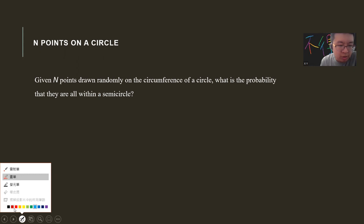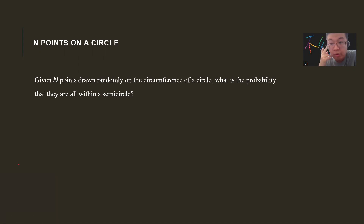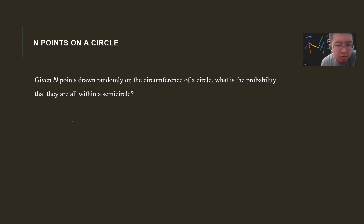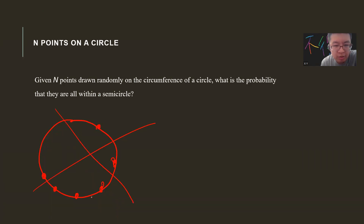This problem is a common interview question. If you want to see more interview questions, you can click my video list below. The problem is basically: you have a circle, you draw some points, and you want to see whether you can find a line where you cut such that they are all on one semicircle.